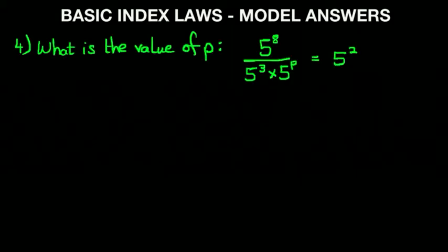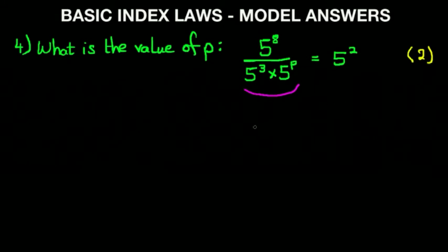Let's move on to question number 4: what is the value of p? We have 5 to the power of 8 divided by 5 to the power of 3, times 5 to the power of p, equals 5 to the power of 2. This question would typically be a 2 mark question, so it is important to show all the workings out. Let's rewrite the equation so we can work through it.